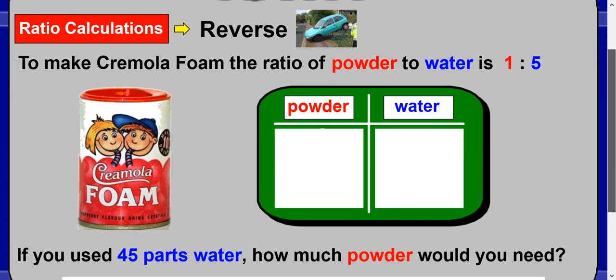Imagine we're making Creamola Foam again and the ratio of powder to water is still 1:5. We'll put 1 here and 5 here. But this time we're told how much water you would use: 45 parts water. We're asked how much powder you would need. That's why it's called a reverse calculation. Be careful and put your 45 in the water side. You're doing the same thing: work out how many times 5 needs to be multiplied to get 45. That's 9: five times nine is 45.